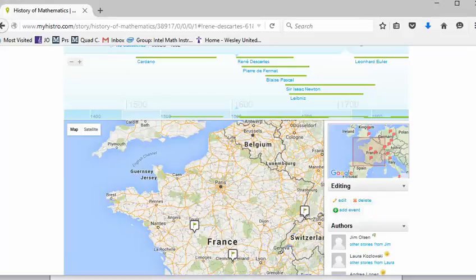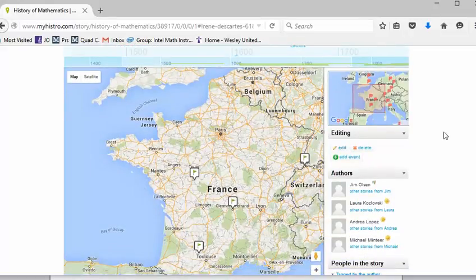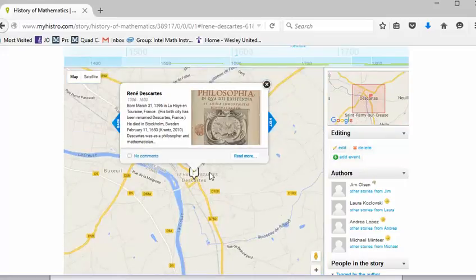Rene Descartes was from France and lived from 1596 to 1650. He developed the coordinate system, the xy axes that we use. In fact, it's called the Cartesian coordinate system after his name, Descartes.